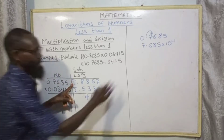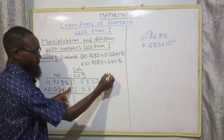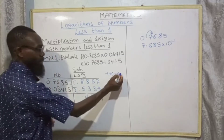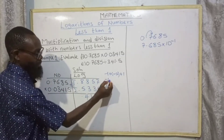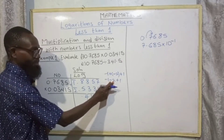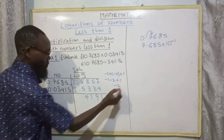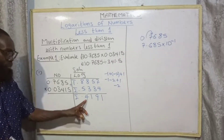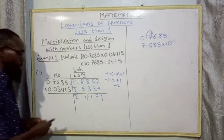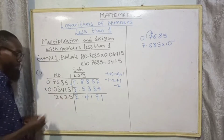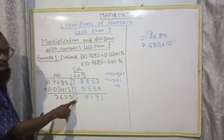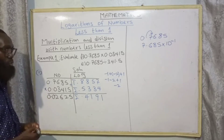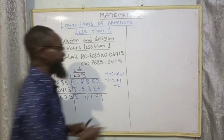Now for the integer: minus one plus bar two (minus two), plus the one we carried, gives us minus one plus minus two plus one, which is minus two. So we have bar two. To get our final answer we check the anti-log table: 41 under 9 difference 1, we have 2625. Bar two means two zeros, so our final answer is 0.02625.